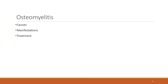Osteomyelitis is an infection of the bone. The most common causative organism is Staphylococcus. Osteomyelitis often comes from an open wound — called exogenous osteomyelitis — but can also be blood-borne, called endogenous. Like any infection, it will result in acute and chronic inflammation, causing constitutional symptoms such as fever, weight loss, and severe bone pain.